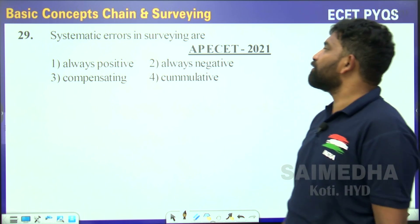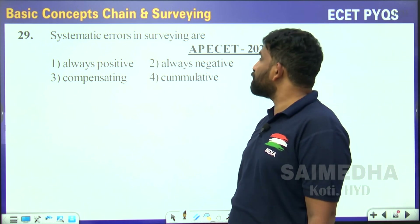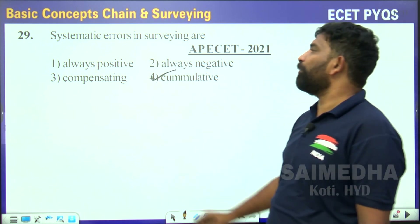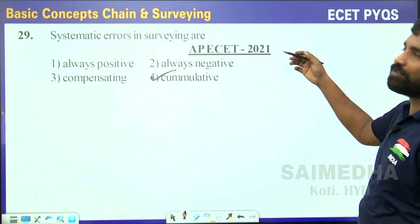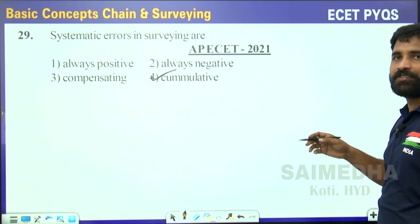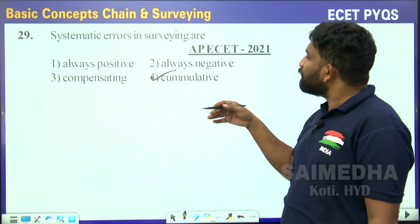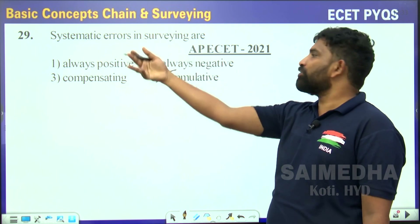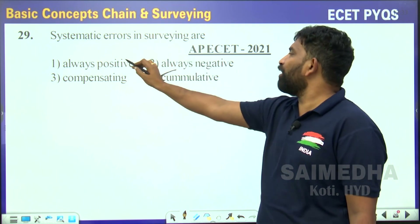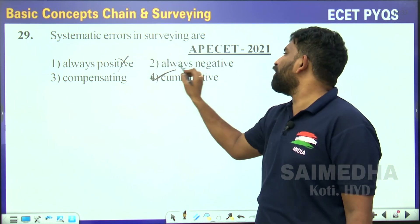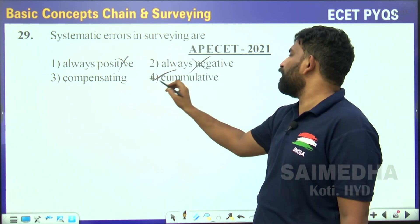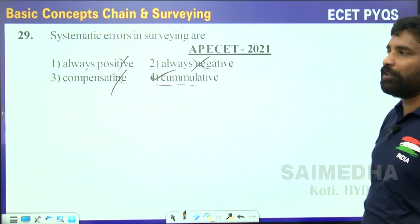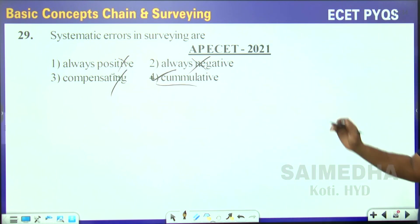Systematic errors in surveying are always cumulative. Systematic errors are nothing but instrumental errors. They will be cumulative either in the positive or negative direction. We can't call them always positive or always negative, and they can't be compensated — they only move in a particular direction.